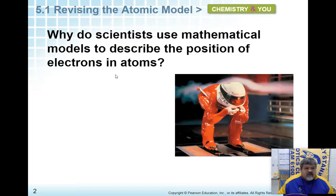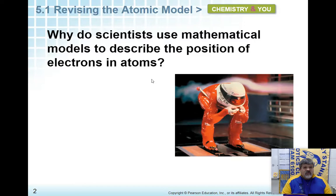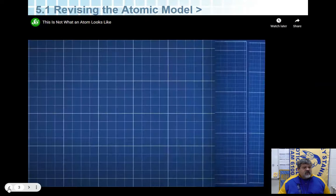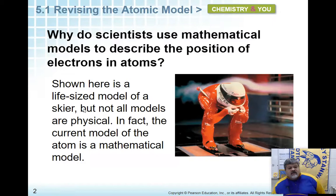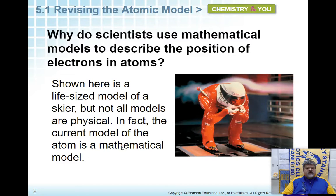It says: why do scientists use mathematical models to describe the position of electrons in an atom? Well, they use a mathematical model because it's a lot easier than a physical model. If we use a physical model, it just doesn't work because we really don't know where the electrons are. The book says the current model for the atom is mathematical, and a mathematical model just gives us a probability of where we're going to find it.